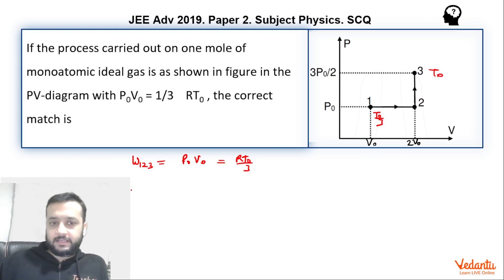So now we can say that delta U will be nothing but n Cv delta T. n is 1, Cv is 3R by 2, delta T is T0 minus T0 by 3. So that is 2T0 by 3. So this becomes RT0.